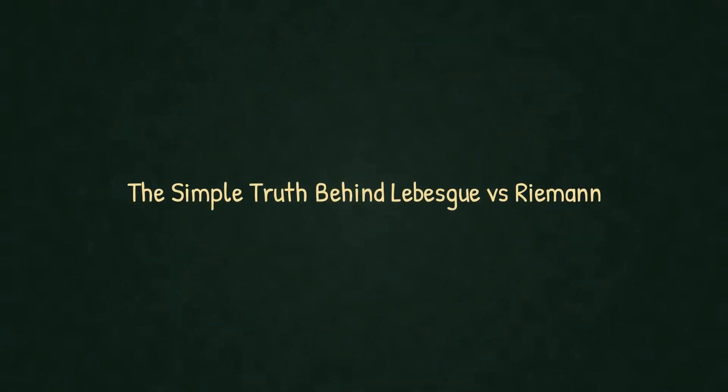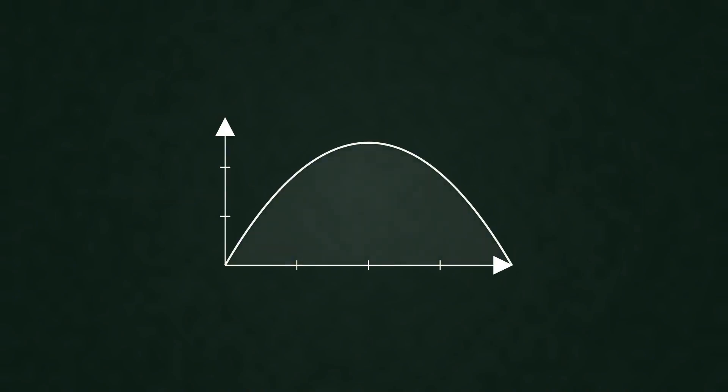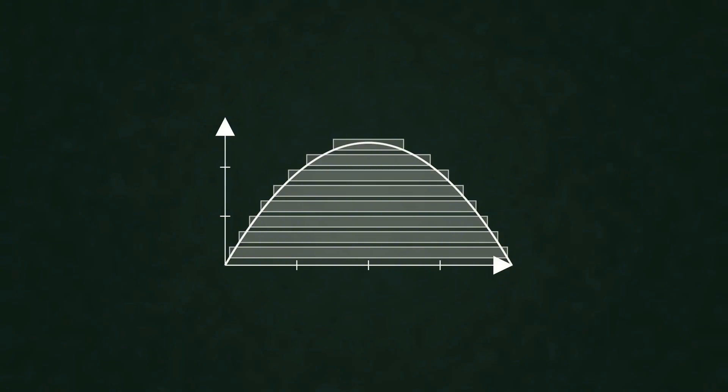What if the common understanding of Lebesgue versus Riemann integration has been missing the point? It's often explained as partitioning the y-axis instead of the x-axis, as if it's some profound geometric revolution. But that's not what really matters.